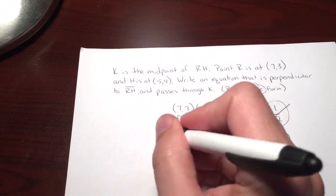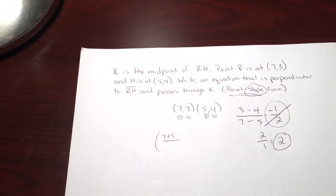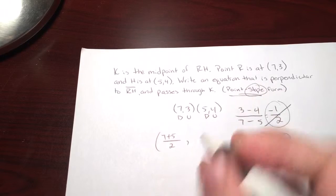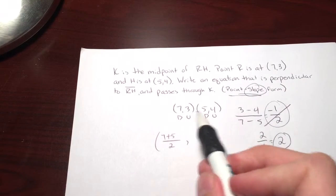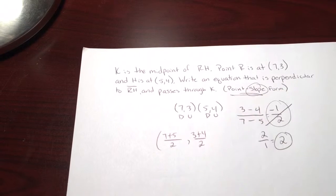Add your X's, 7 and 5, and cut that in half. Add your Y's, 3 and 4, and we cut that in half.